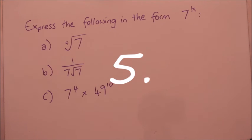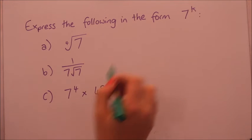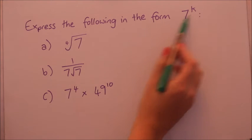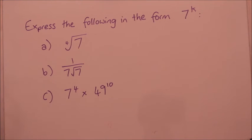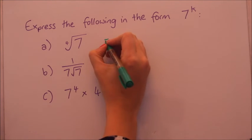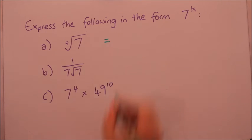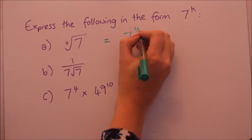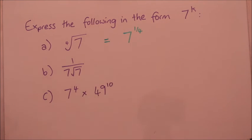Okay this is a question I found in an Edexcel past paper actually. So for each one we want to express them in the form of seven to the power of just something. So the first one is the most straightforward. It's a fourth root so that will be seven to the power of a quarter. So in that case k is a quarter.